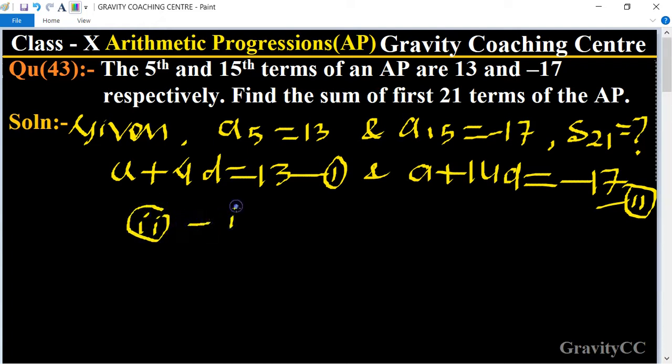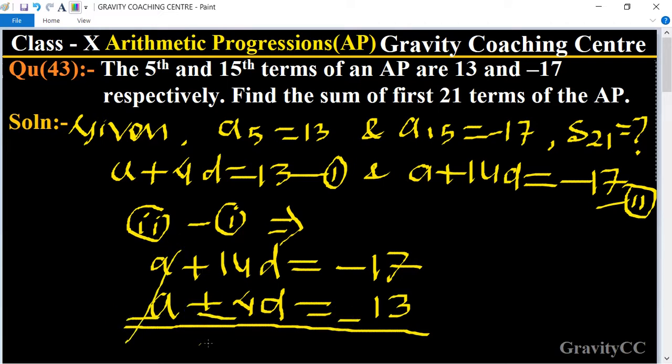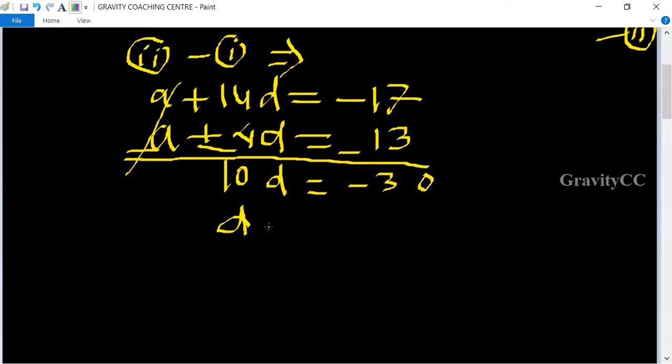Now equation 2 minus equation 1. We get a + 14d = -17 and a + 4d = 13. Minus, minus, minus, cancel. So 10d = -30. So d = -30/10 = -3.